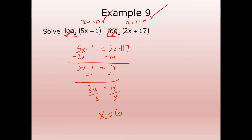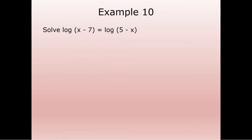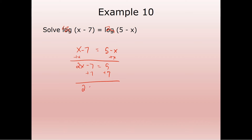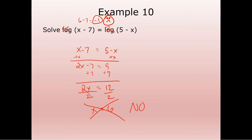We just want to make sure our answer is not extraneous. Next: log of X minus seven equals log of five minus X. They're both common logs, so we set the arguments equal by the equivalence property. Adding X: X minus seven equals five minus X. Two X equals 12, divide by two: X equals six. We check — six minus seven is negative one. We cannot have negative one as our argument. Therefore X equals six does not work — there is no solution.